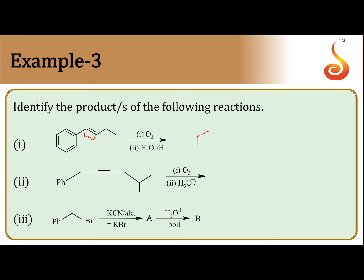Now let us see our first reaction. Using the technique: remove the double bond and convert it into a carboxylic acid. The products obtained here are benzoic acid and propanoic acid — CH₃CH₂COOH. These are the products obtained in the first reaction.